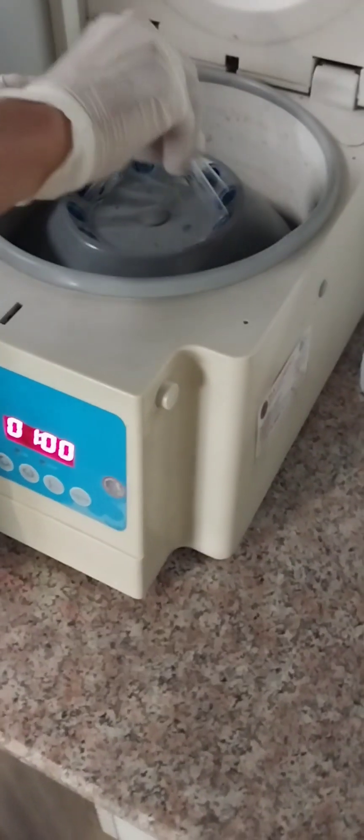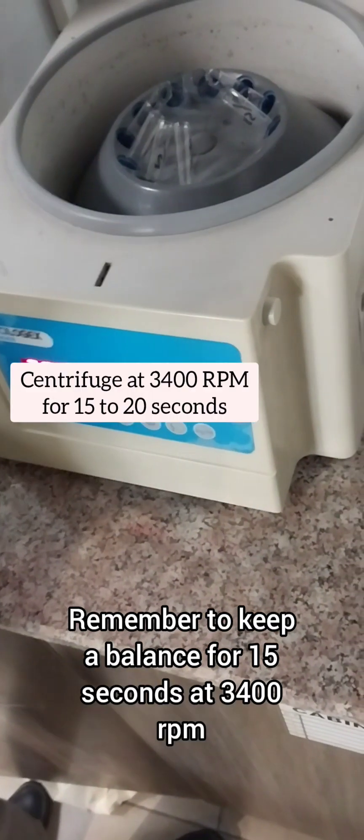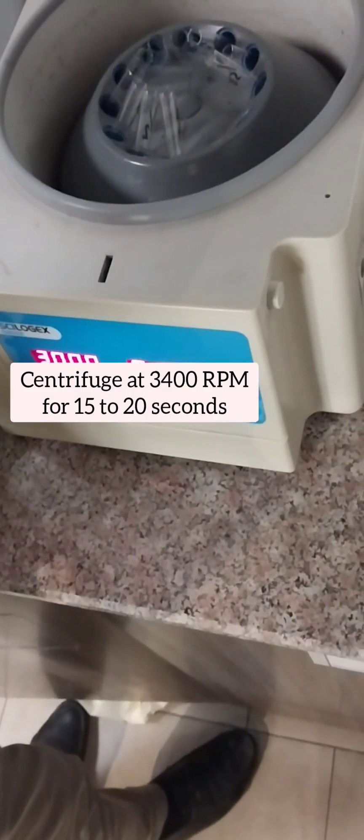Now we are going to centrifuge these tubes. Remember to keep a balance for 15 seconds at 3400 rpm.